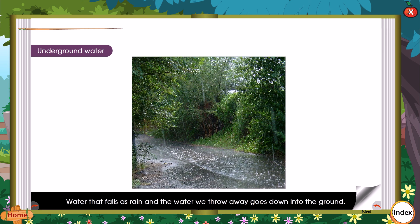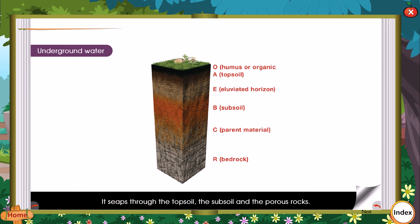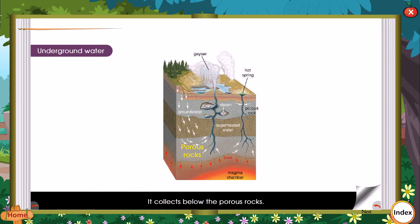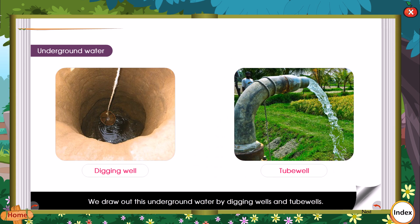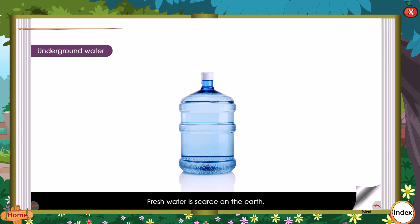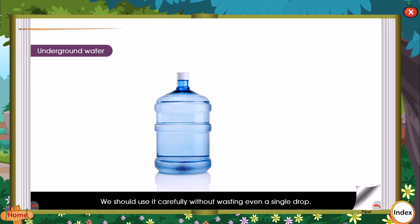Underground Water: Water that falls as rain and the water we throw away goes down into the ground. It seeps through the topsoil, the subsoil and the porous rocks, and collects below the porous rocks. There is a large storage of underground water. We draw out this underground water by digging wells and tube wells. The level of underground water in an area is called the water table. Fresh water is scarce on the earth — we should use it carefully without wasting even a single drop.